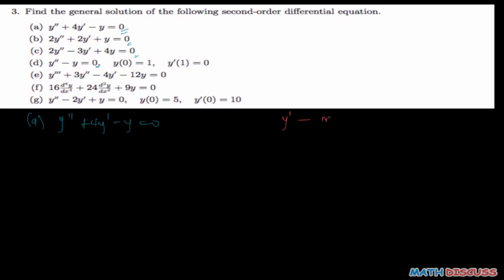To form the auxiliary equation, anywhere you see y or y' you replace it with m. If you see y'' you replace it with m squared. If you see y''' we replace it with m to the power 3. And if you see the nth derivative of y, it will be replaced with m to the power n. That's the paradigm for solving the differential equation.